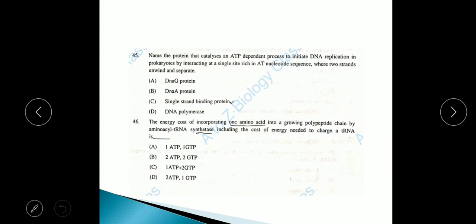Question 45: Name the protein that catalyzes an ATP dependent process to initiate DNA replication in prokaryotes by interacting a single site rich in AT nucleotide sequence where two strands unwind and separate. The answer will be option B, DNA A protein. DNA A is a hexameric protein joined to 9 base pair repeat region and starts degrading first bond to open up the helix. DNA A helps in melting, binds the 9mer position of origin of replication.